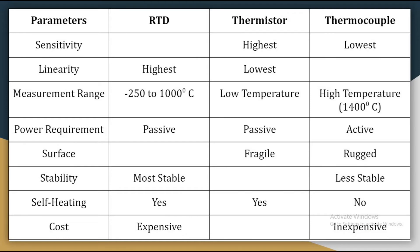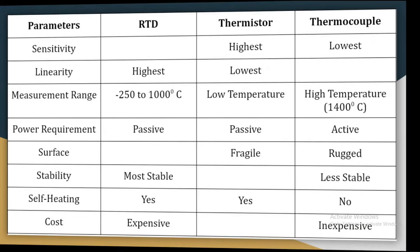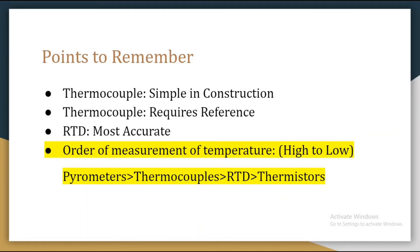Now that we are done with the comparison, let us see some points to remember. Thermocouple is the only device among RTD, thermistor, and thermocouple which is simple in construction, and it requires a reference. Due to this reference, one phenomenon occurs in thermocouple which is called cold junction compensation — we basically compensate the cold junction temperature.